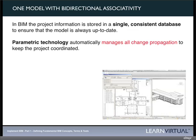BIM manages change propagation through parametric technology — the ability for parameters to be set in an object, whether changing the parameters of a door, window, or piece of furniture, or the parameters within a wall or slab such as materials or wall type. Those parameters allow us to change an element in one place and have it propagate for a better coordinated project.